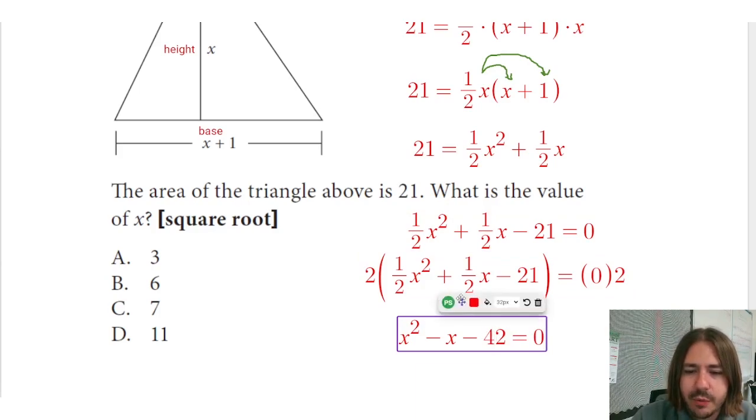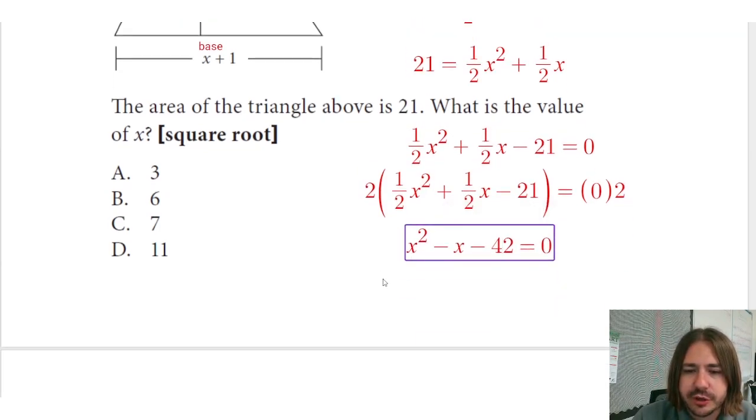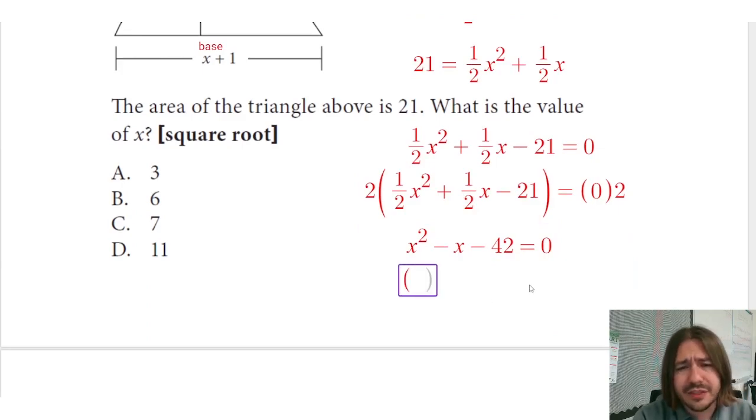Okay, but now we can factor this. And to factor this, we're going to find two values, two numbers that multiply to give me negative 42 and add up to negative 1. That's going to be positive 6 and negative 7.